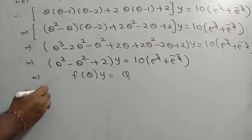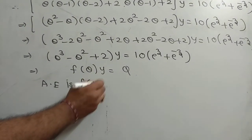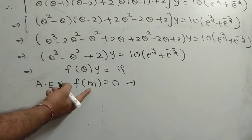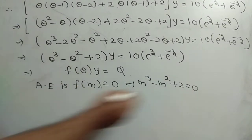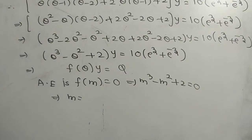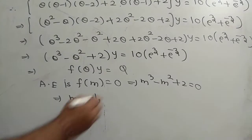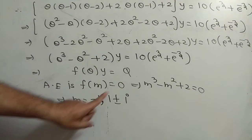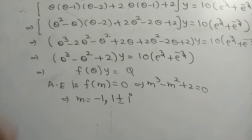This is of the form f(θ)y = q, where f(θ) = θ³ - θ² + 2 and q = 10e^z + e^(-z). Calculate the auxiliary equation f(m) = 0, substituting m for θ: m³ - m² + 2 = 0. There are three values for m; using a calculator, the roots are m = -1 and m = 1 ± i — both real and complex roots.